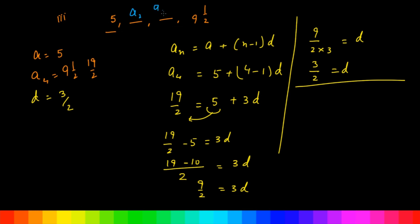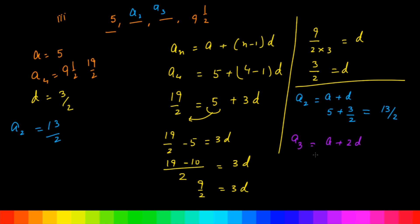Now let us find the missing terms. A2 = A + D = 5 + 3/2 = 13/2. So A2 is 13/2. A3 = A + 2D = 5 + 2 × (3/2). The 2 cancels, giving 5 + 3 = 8. Hence the third term is 8.